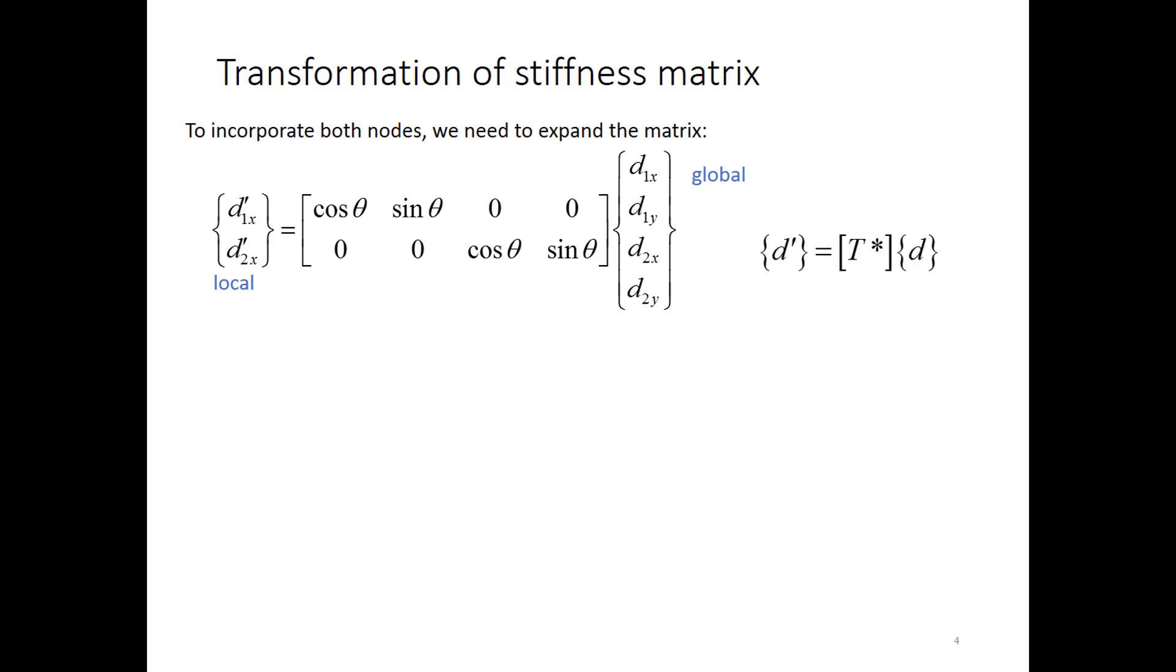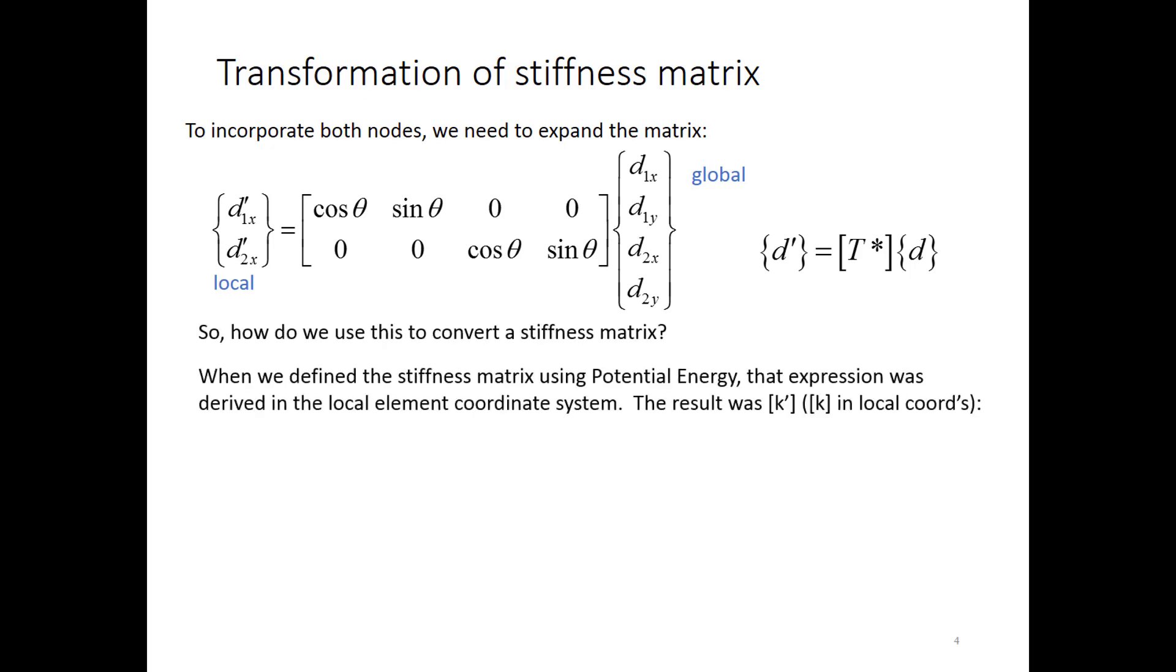So I'm going to rewrite this expression in simplified form. I've got the local degree of freedom vector is equal to a transformation matrix T star multiplied by the global degree of freedom vector D. So we've got this. What does this do for us? Well, think back to when we defined the stiffness matrix using the potential energy formulation. We came up with an expression, specifically the internal strain energy, that was derived for an element. When I went through that derivation, I didn't make any specific definition that it was local or global, but because we were integrating over the element, it just makes sense to say that we were defining a local element coordinate system.